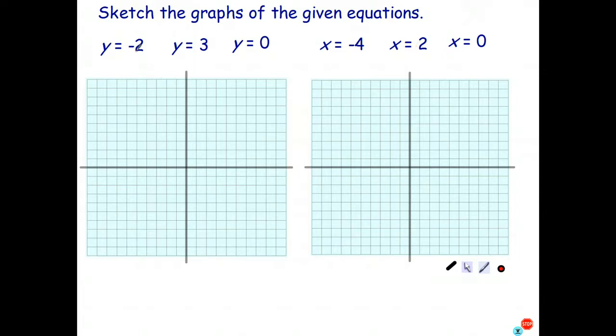So sketch the graph of y equals negative 2. Well, all we have to do, we know that y equals is always a horizontal line. So find y equals negative 2 on the y-axis, and just sketch the line like so. I might make that a little bit tidier if I can. A bit hard doing this on the screen. And that's all there is to it.